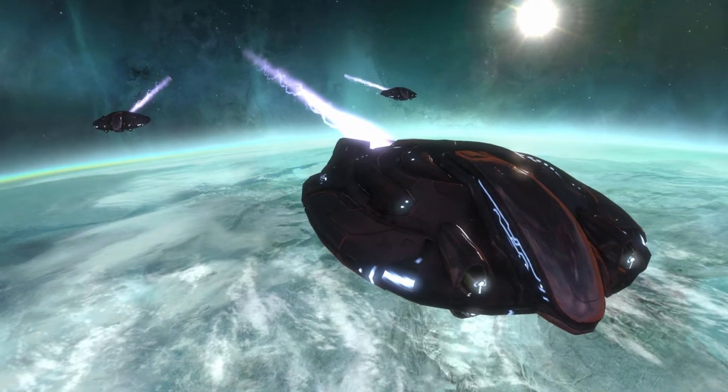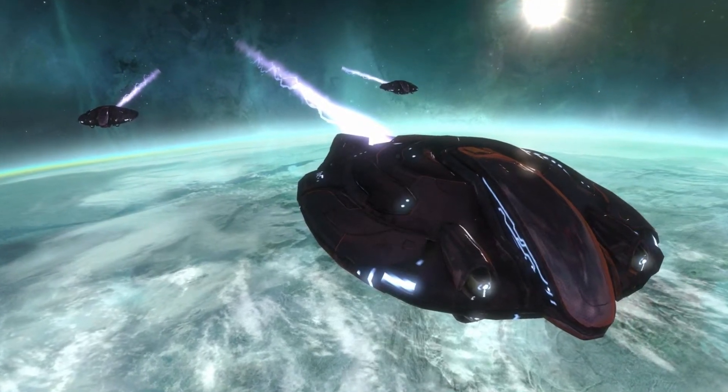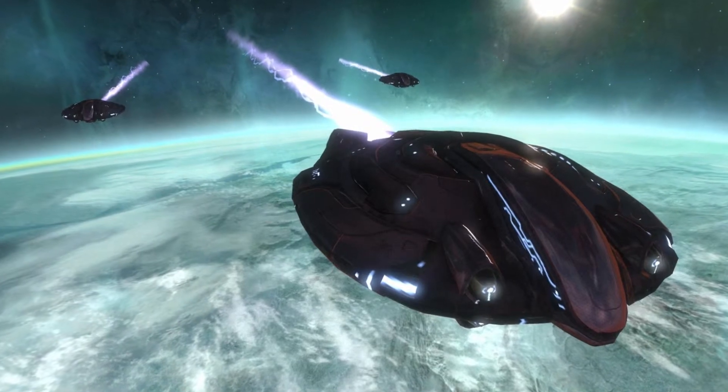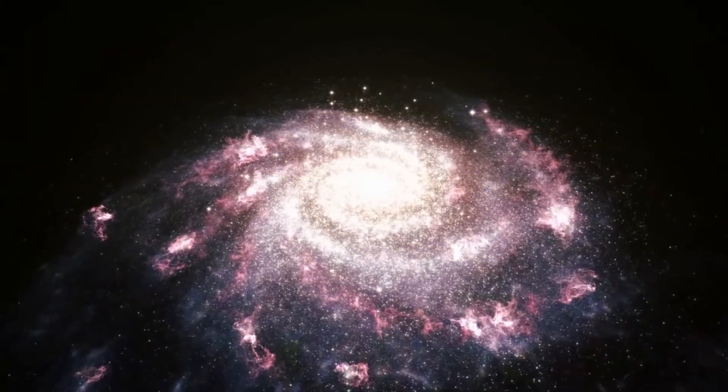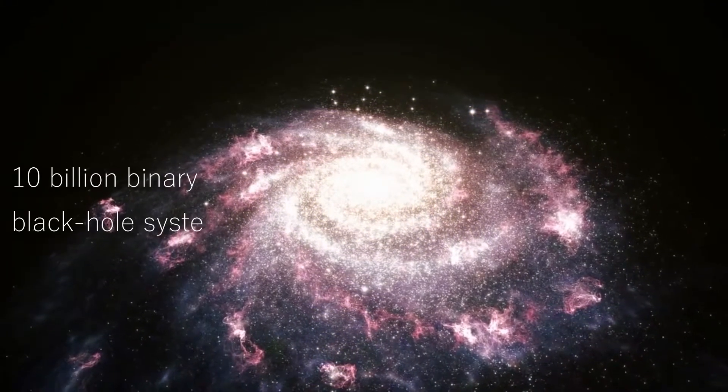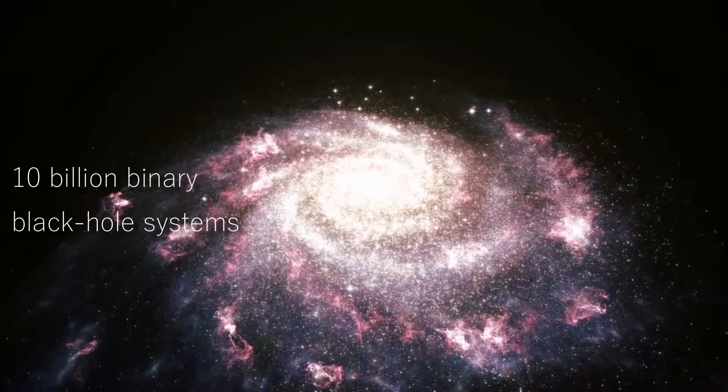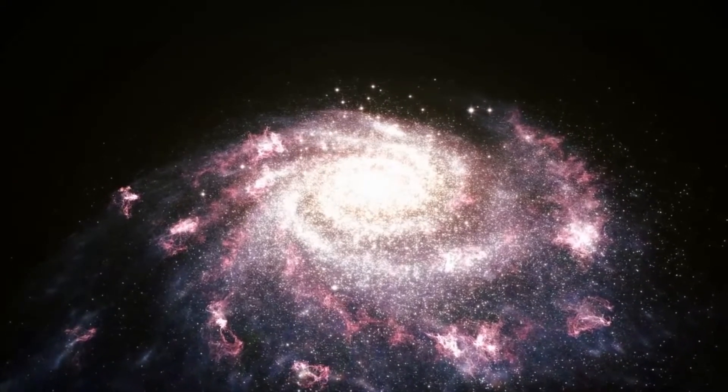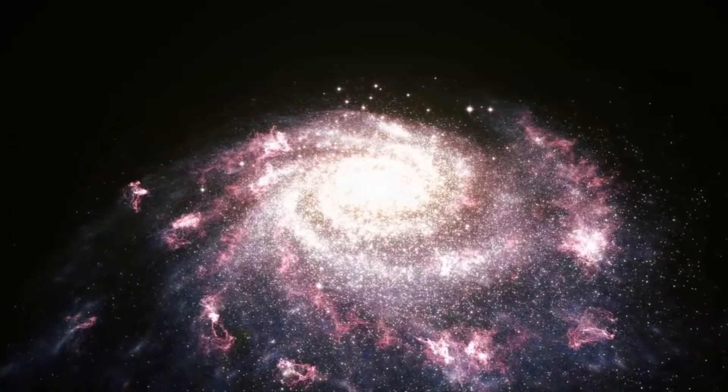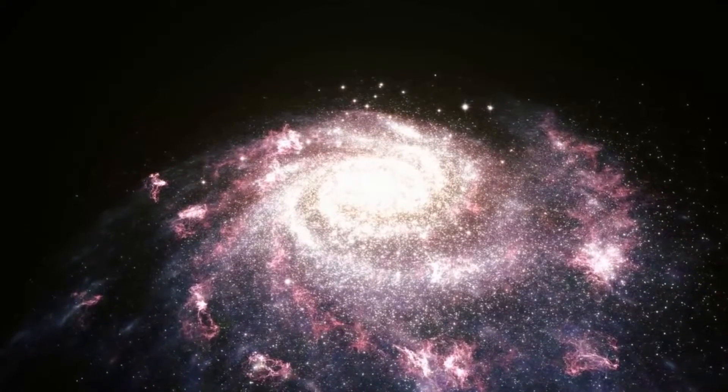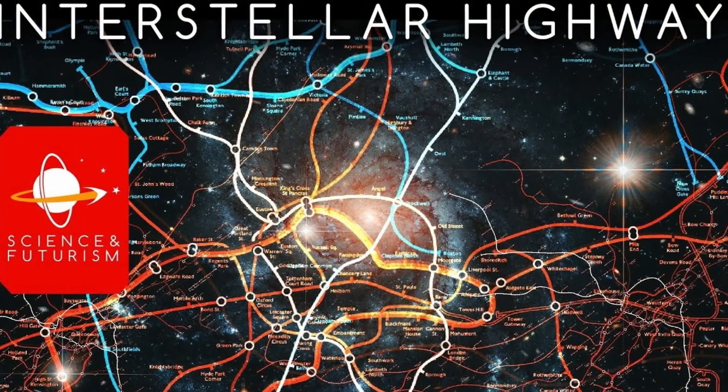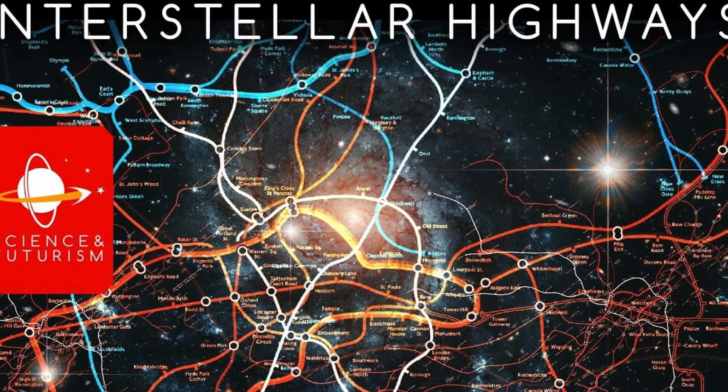So this advanced civilization would probably look for pairs of binary black hole systems to act as accelerators and decelerators. The Milky Way contains around 10 billion binary black hole systems. But Kipping points out that there are likely to be just a limited number of trajectories that link them together. So these interstellar highways are likely to be valuable regions.